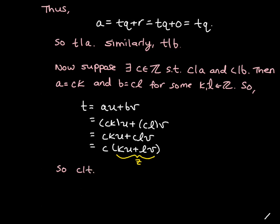Now we know that every divisor of t is less than or equal to the absolute value of t — this is a remark from earlier in this section. Any divisor of a number must be less than or equal to the absolute value of that number. We know t is a positive number, so the absolute value of t is just t. Therefore c is less than or equal to t. It follows that t is the GCD, since it satisfies both criteria in the definition of greatest common divisor.